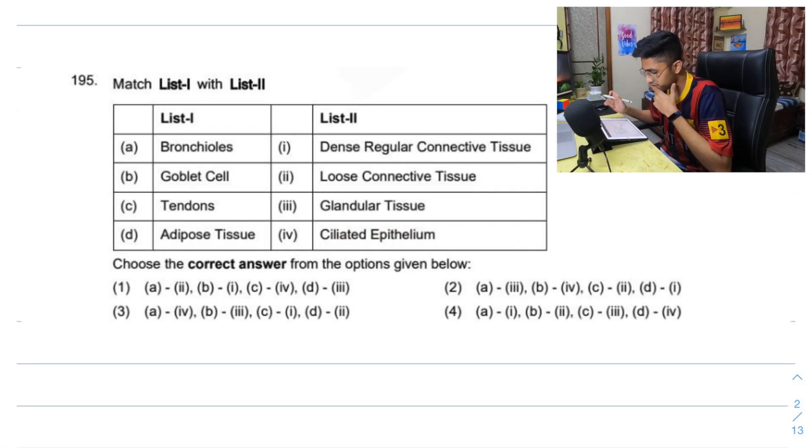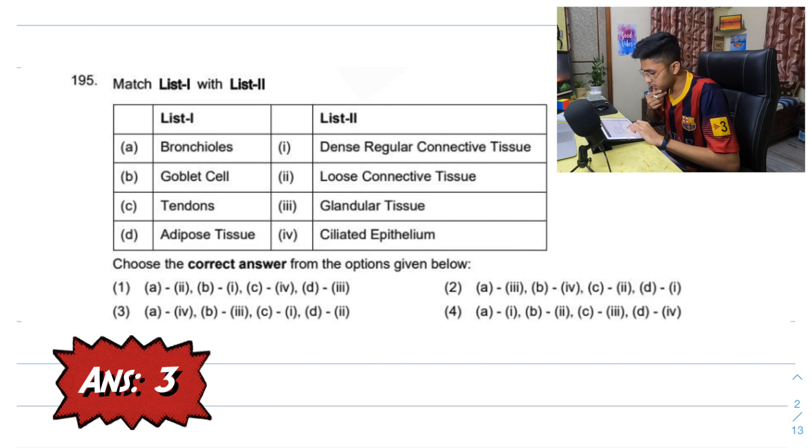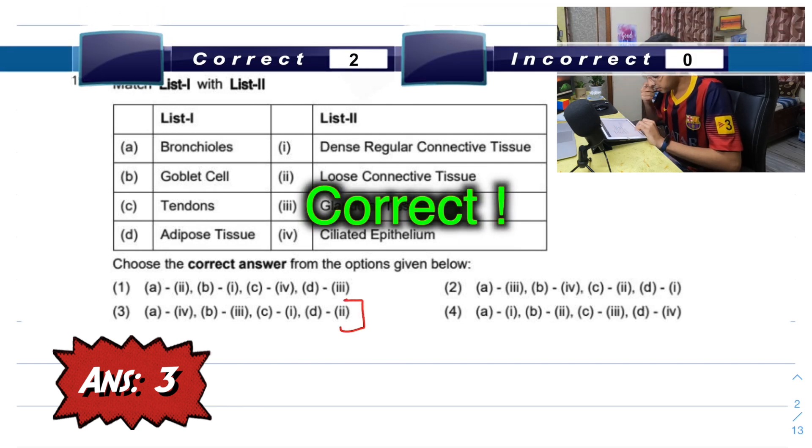This is something I should be good with. We have to match the tissue with the type of tissue they are. Bronchioles - ciliated epithelium. So A should be 4. Oh there's only one option, that's easy then. Goblet cells which is glandular. Tendons are dense regular connective tissue. Adipose tissue is a loose connective tissue. They make things pretty easy here. That's nice.